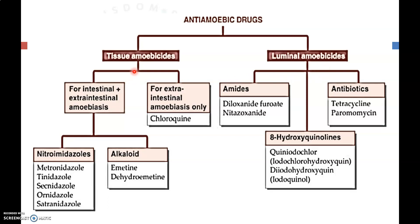Anti-amoebic drugs are classified into tissue amoebicides and luminal amoebicides. Tissue amoebicides are further classified into those for intestinal and extra-intestinal amoebiasis. For intestinal and extra-intestinal amoebiasis, they are classified into nitroimidazoles and alkaloids. Emetine and dehydroemetine are examples of alkaloids.